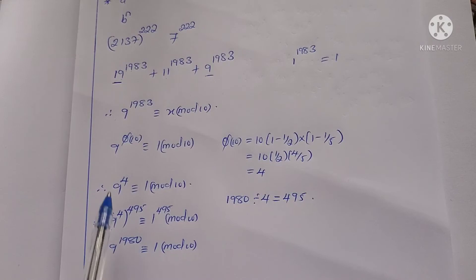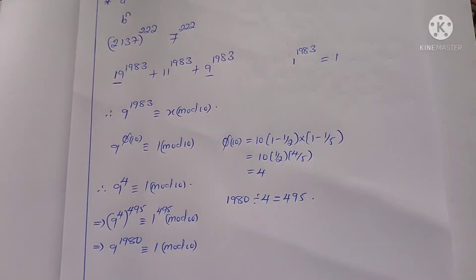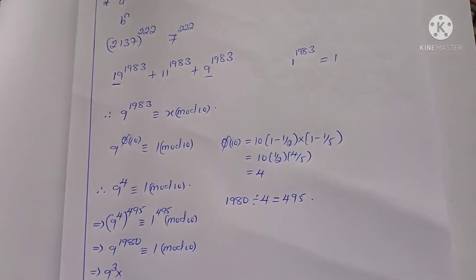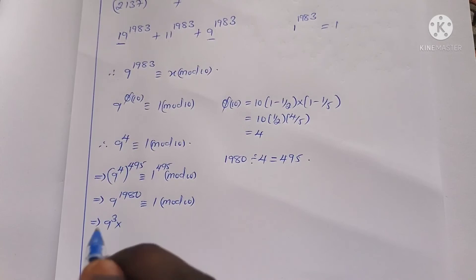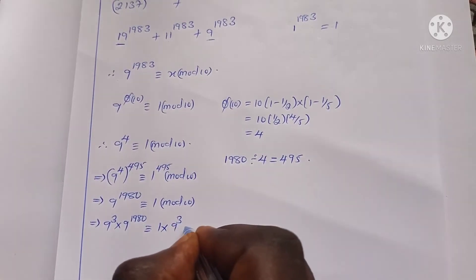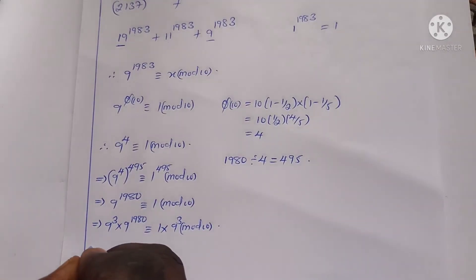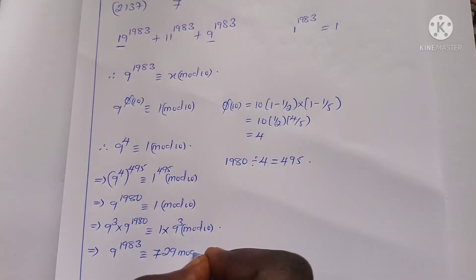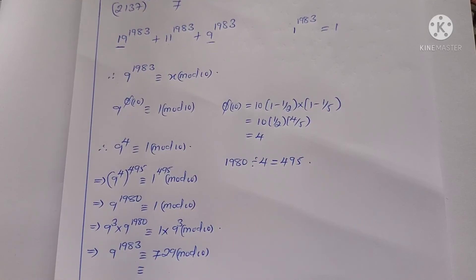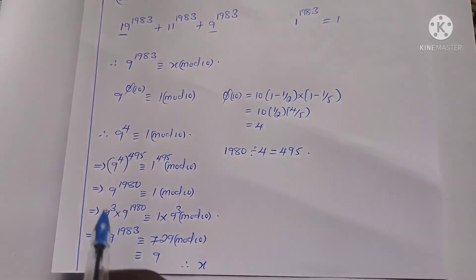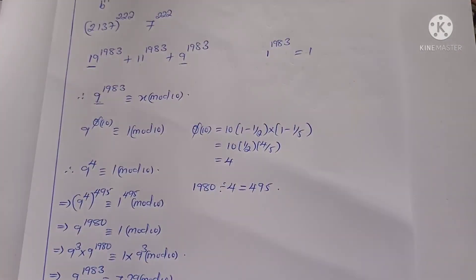Since 1,980 is very close to 1,983, we multiply both sides by 9^3. This gives us 9^3 × 9^1,980 ≡ 1 × 9^3 (mod 10), which means 9^1,983 ≡ 729 (mod 10). The remainder of 729 mod 10 is 9, which is the unit digit of 729. Therefore, the unit digit of 9^1,983 is 9, so x = 9.